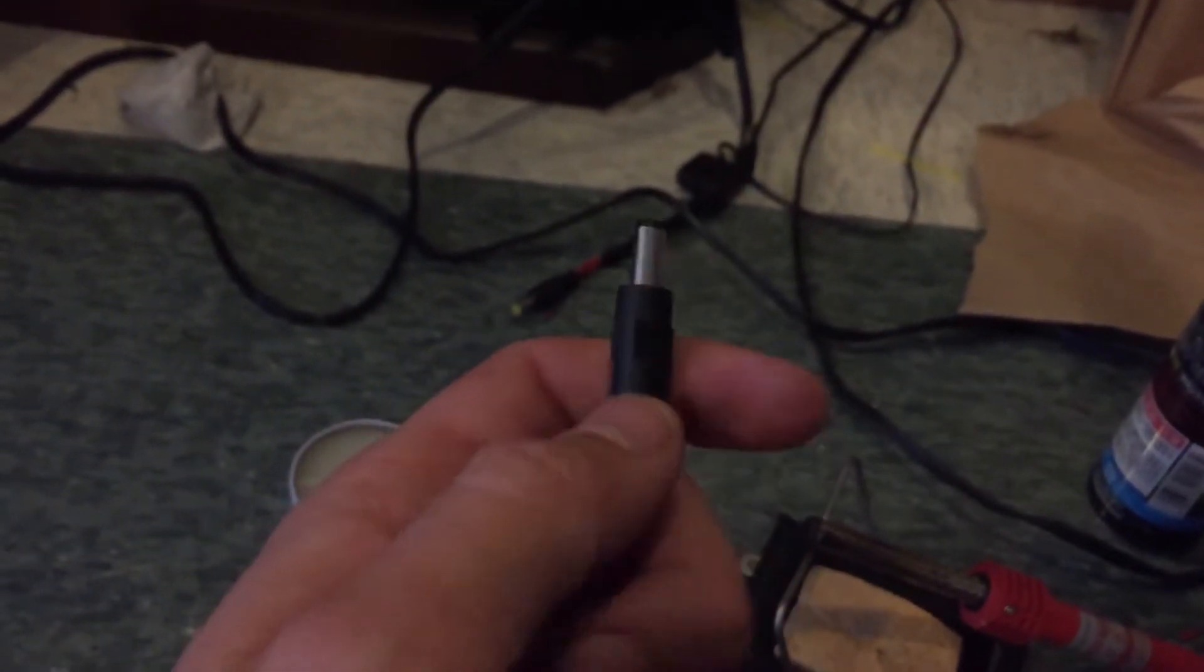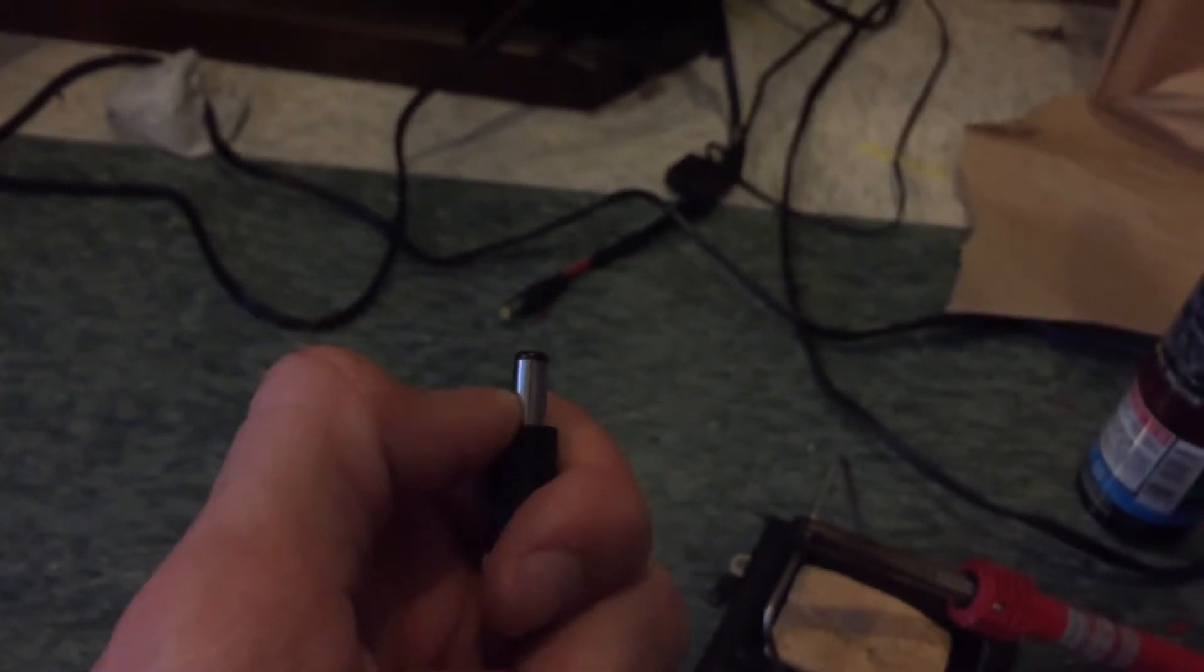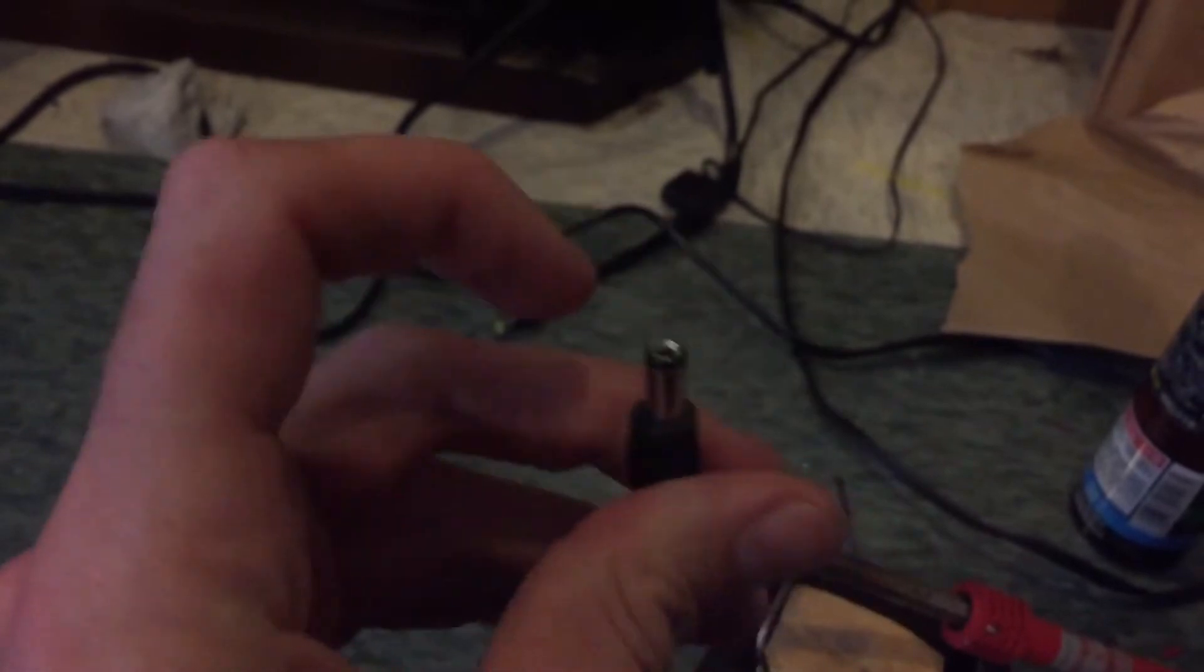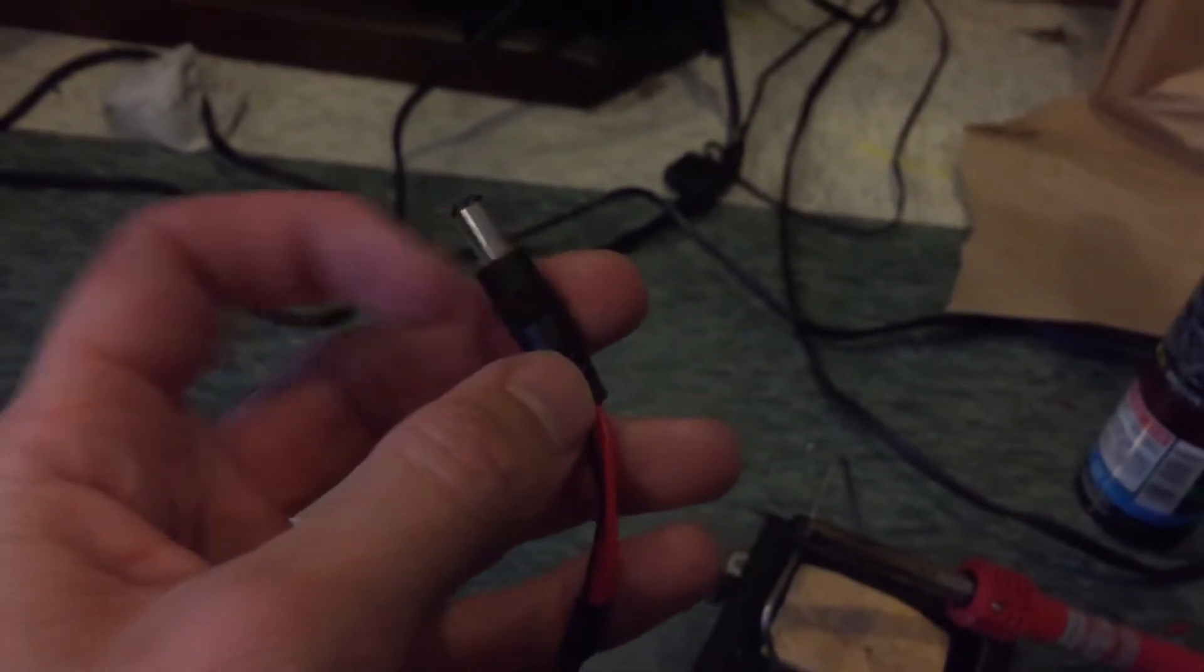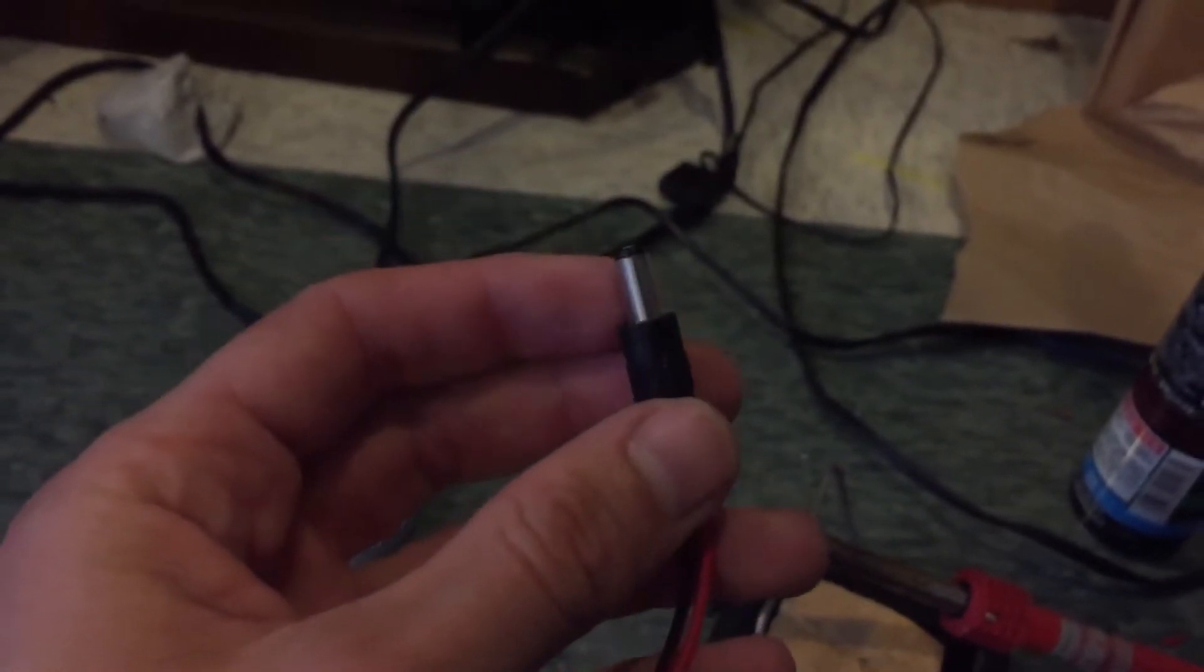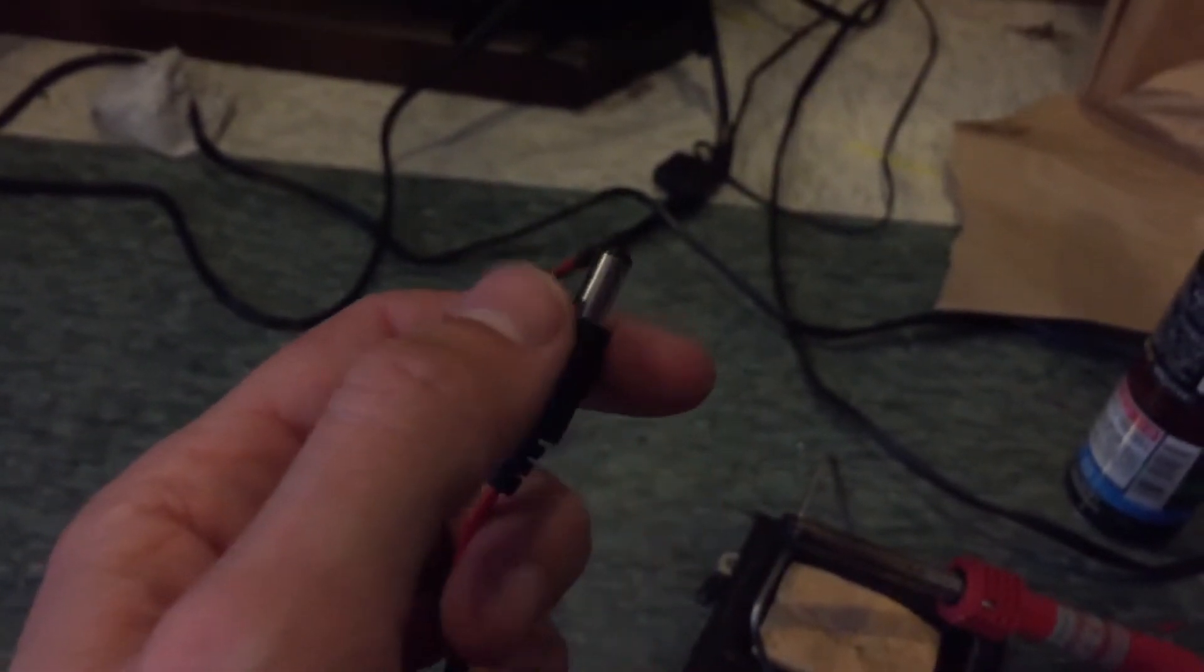But if I remember correctly, you will have just the smooth outer part here, negative, and then inside you'll have a terminal sticking out on the back end that's going to be the positive. So you just have to kind of look at what you have and you should be able to figure it out.